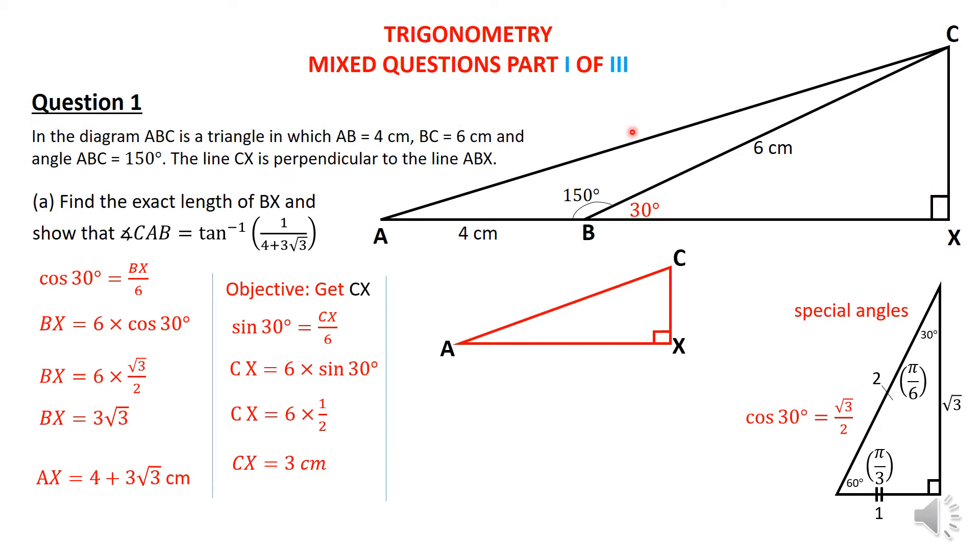So let me bring the whole ACX triangle and let me put in the values that I have calculated. Now that I have this, I don't really need to do anything with AC. That's going to be a question for the later part. I then have to use the tangent ratio in order for me to find or to prove that this angle here, CAB, is equal to the inverse tangent of 1 upon 4 plus 3 root 3. And you know that you find tangent by taking the opposite divided by the adjacent side. So it's going to therefore be that the inverse angle is equal to 1 upon 4 plus 3 root 3, which is exactly what we require to prove.